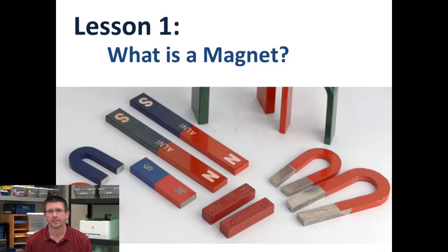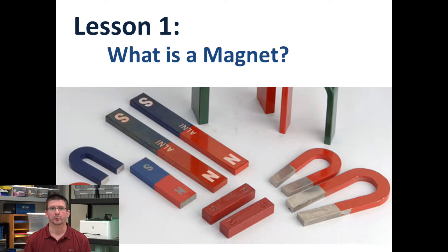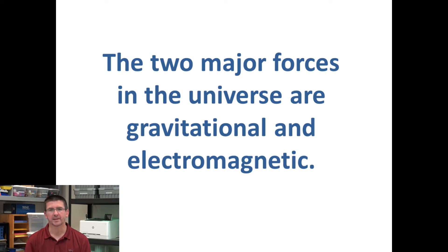We are going to start our new unit on magnetism and static electricity, first of all by just talking about what a magnet is. Most people have seen a magnet pick up a paper clip or small metal objects, but magnets actually represent a type of force called electromagnetism. Electromagnetism and gravitational forces are basically the two major forces in our universe, and most things that we see happening in some way, shape, or form can be attributed to one of those. Magnetism is a big part of that.